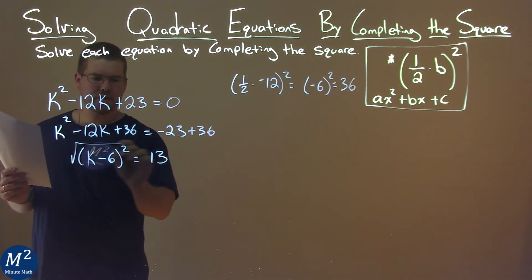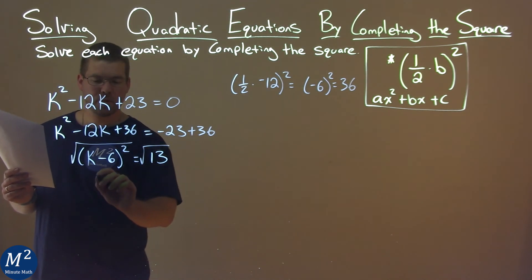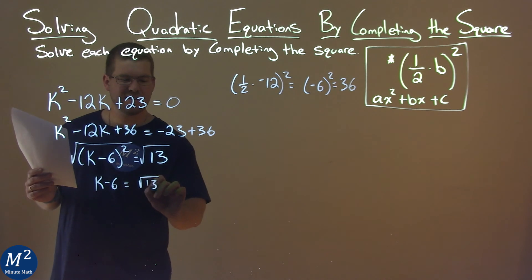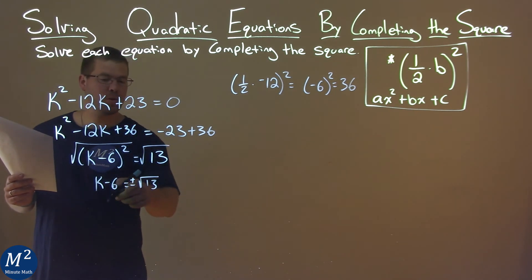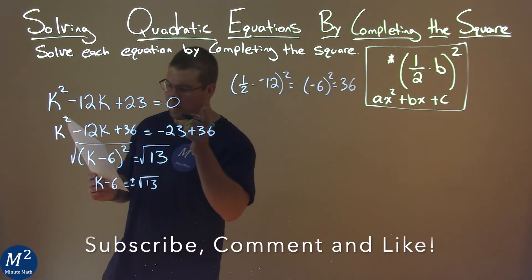To solve this, I now take a square root over the equal sign, and we have k minus 6 equals the square root of 13. It doesn't really simplify. Add a 6, oh, don't forget, it's a plus or minus. Square root over an equal sign, plus or minus. I almost forgot.